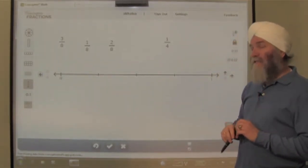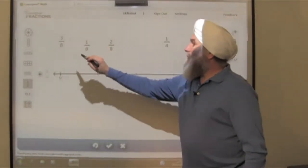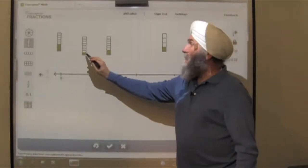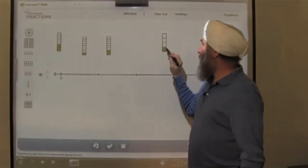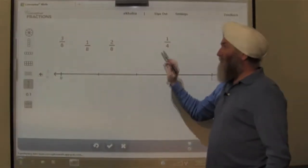So now where do these eighths belong? Well, if we change the way that the eighths are represented, we might learn more about them. Here's our 1 eighth, and here's our 2 eighths, and here's 1 fourth. Let's look at that again. 1 eighth, 2 eighths, and 1 fourth.